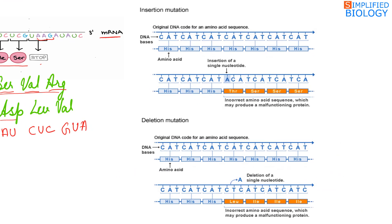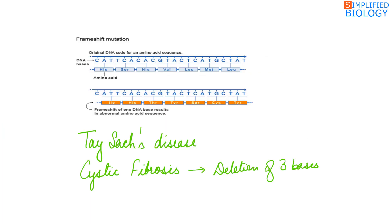As shown in the diagram, in the case of an insertion at a particular position, the histidine amino acid gets replaced by threonine and the complete sequence of amino acids changes further. In the case of a deletion at a specific position, right from that position the complete codon sequence changes, and hence the complete sequence of amino acids in the polypeptide chain changes.